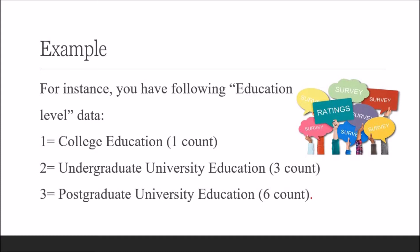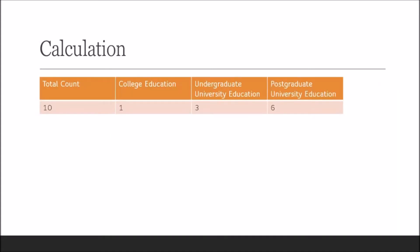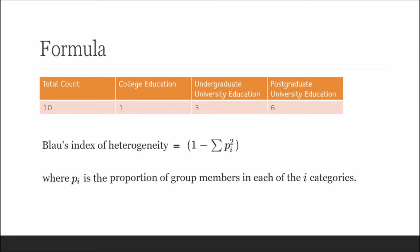Number one is college education and your count is one. Number two is undergrad university education and your count is three, meaning you have three respondents. Number three is postgrad university education and you have a count of six. The formula for Blau's Index of Heterogeneity is 1 minus sigma pi-squared, where pi is the proportion of group members in each of the i categories.